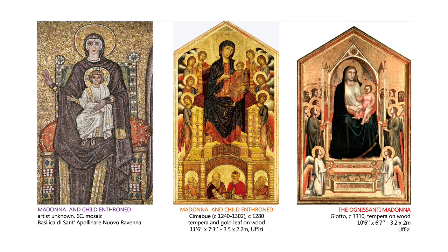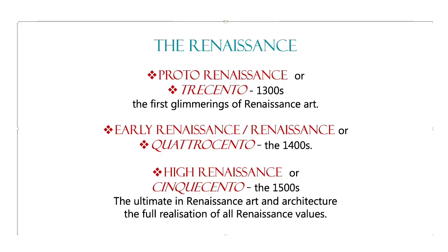Then we have Giotto's own Madonna and Child. The scale is still a little off, but look at the perspective: the angels go back and back, not arrayed so we can see them all, but in some kind of visual realism. You can see the Madonna's body, you can feel her sitting on that throne. And this is so early — this is 1310 — and here is the father of the Renaissance kicking off the greatest art movement of all time.